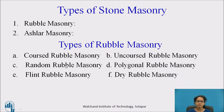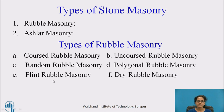There are different types of stone masonry: rubble stone masonry and ashlar masonry. In rubble masonry, the stones are either undressed or roughly dressed, whereas in ashlar masonry the stones are finely dressed. The different types of rubble masonry are: coursed rubble masonry, uncoursed rubble masonry, random rubble masonry, polygonal rubble masonry, flint rubble masonry, and dry rubble masonry.